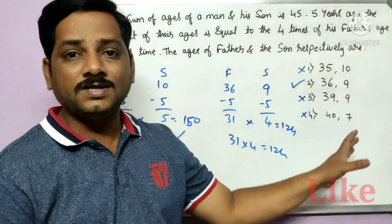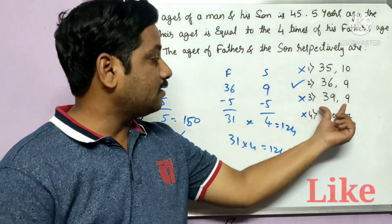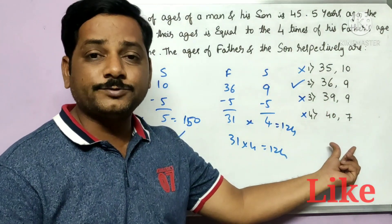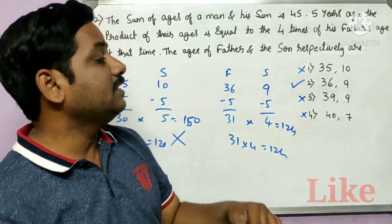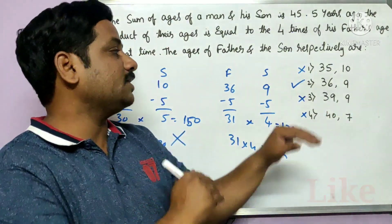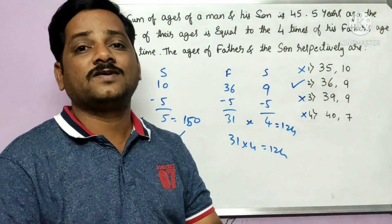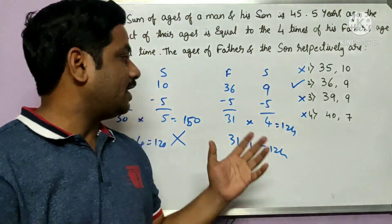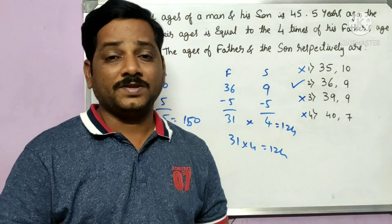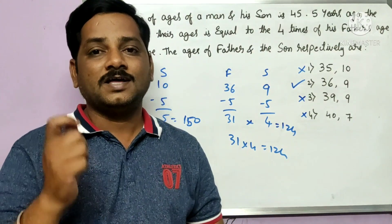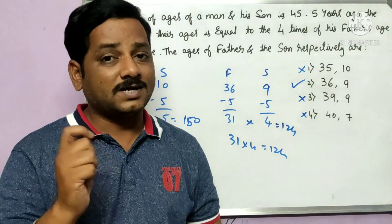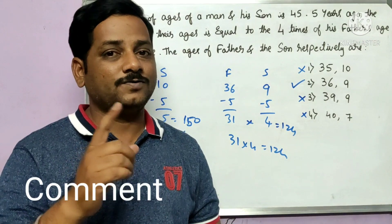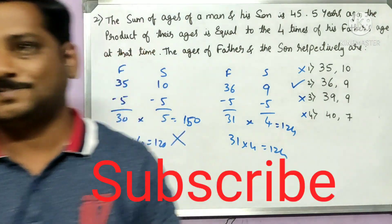By observing the options relative to the statement, you can remove unwanted options easily, and from the remaining options find the answer very fast. I hope this concept is clear. If it is, please like and comment on this video, share it among your friends, and don't forget to subscribe to the channel. Thank you.